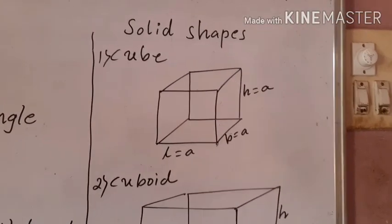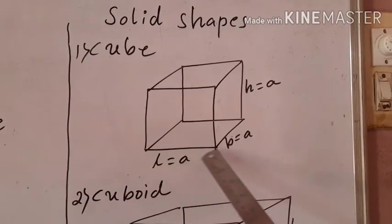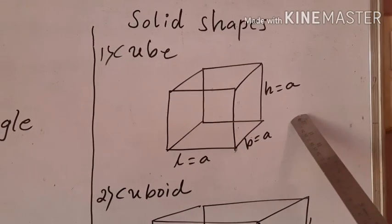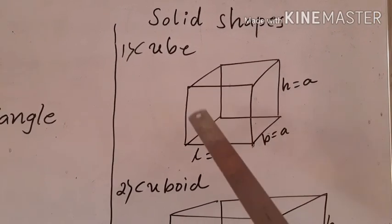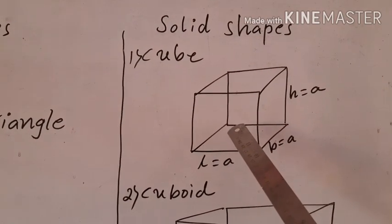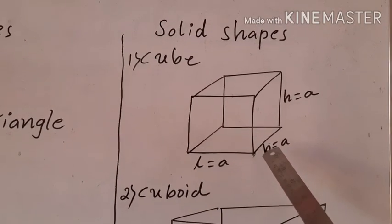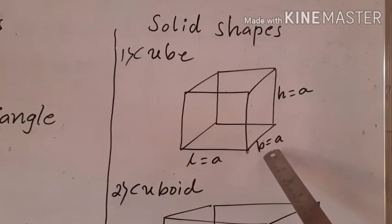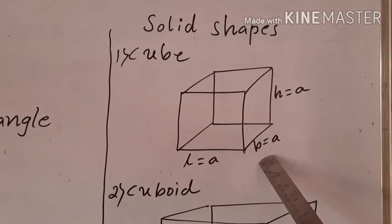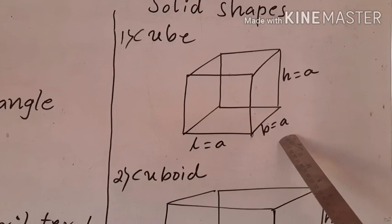Look at the solid shapes. This has three dimensions: length, breadth, and height. Therefore it is a 3D shape. Each face is a square shape and it has 6 faces. Such a figure is called a cube. A cube is a 6-faced figure in which all the faces are square-shaped and length, breadth, and height are all equal to each other.